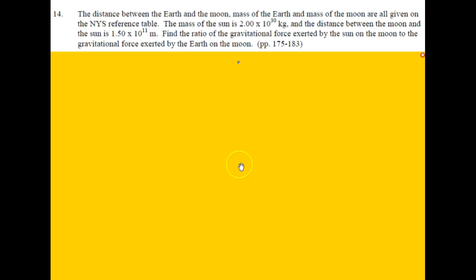All right, number 14. The distance between the Earth and the Moon, mass of the Earth and mass of the Moon are all given on the New York State reference table. The mass of the Sun is 2 times 10 to the 30th kilograms. And the distance between the Moon and the Sun is 1.50 times 10 to the 11 meters. Find the ratio of the gravitational force exerted by the Sun on the Moon to the gravitational force exerted by the Earth on the Moon.